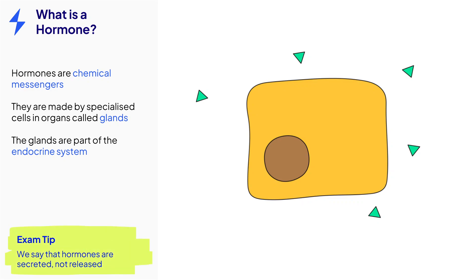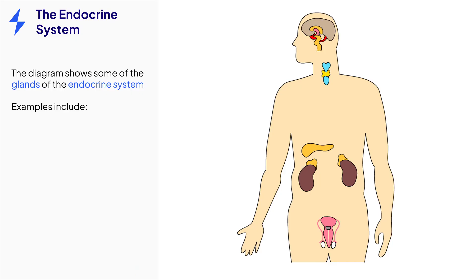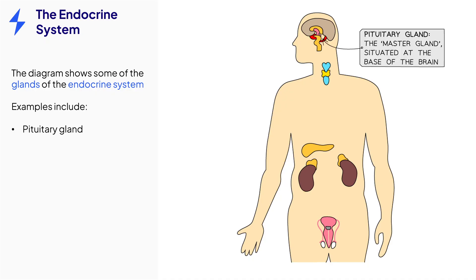When referring to hormones being released, we use the word 'secreted' instead because it is more scientifically accurate. The endocrine system is made up of all of the glands that secrete hormones. This diagram shows some different examples of these glands. The pituitary gland is called the master gland because the hormones it secretes control a lot of the other glands in the endocrine system.